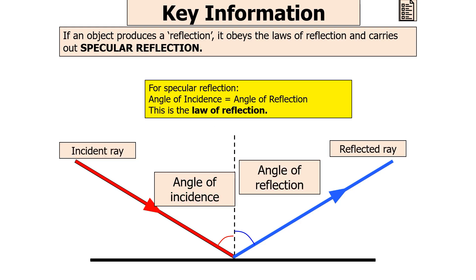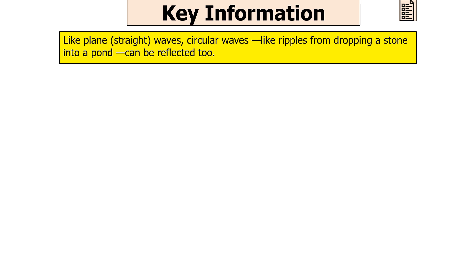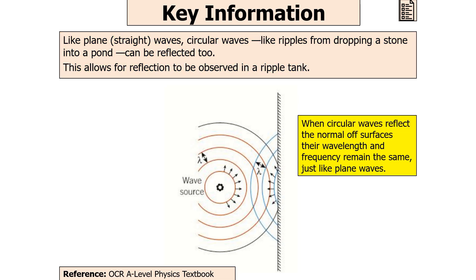For specular reflection the angle of incidence equals the angle of reflection — this is the law of reflection. The law of reflection is only obeyed if the angles of incidence and reflection are found in the same plane. Like plane waves, circular waves — such as ripples from dropping a stone into a pond — can also be reflected. This allows reflection to be observed in a ripple tank. When circular waves reflect, their wavelength and frequency remain the same, just as in plane waves.